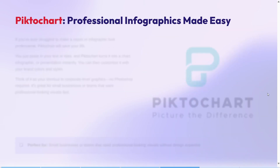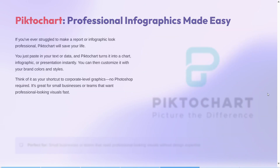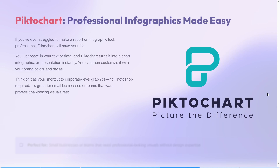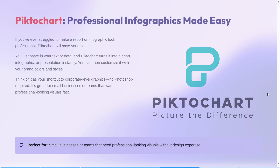At number 2, we have Piktochart. If you ever struggle to make a report or infographic look professional, Piktochart will save your life. You just paste in your text or data, and Piktochart turns it into a chart, infographic, or presentation instantly. You can then customize it with your brand colors and style — think of it as a shortcut to corporate-level graphics, no Photoshop required. It's great for small businesses or teams that want professional-looking visuals fast.